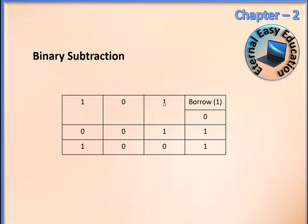To be clear: 1 minus 1 gives a net result of 0 because we didn't borrow anything. But for 0 minus 1, since the top number is 0, we have to borrow, and the bit will be 1. Even though it looks like 1 and 1, don't write it as 0 — it should be 1. This is the key point to remember.